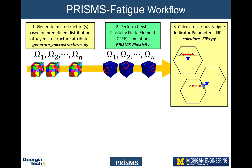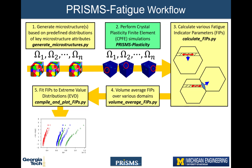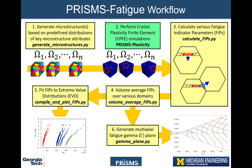Local micromechanical response from quadrature outputs is used to calculate fatigue indicator parameters, or FIPs, in the CalculateFIPs.py script. These FIPs are volume averaged over various domains such as entire grains or sub-grain regions in the VolumeAverageFIPs.py script. FIPs are then compiled to create plots. One plotting capability fits FIPs to extreme value distributions, enabling the rank ordering of different types of microstructures based on resistance to fatigue. Another powerful capability is the generation of a computational multi-axial fatigue gamma plane, which considers an array of possible multi-axial strain states and magnitudes and is vital to component design engineers.